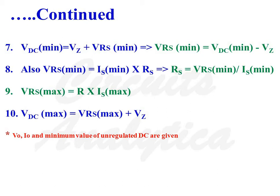VRS maximum is equal to RS times IS maximum. And VDC maximum is equal to VRS maximum plus VZ.